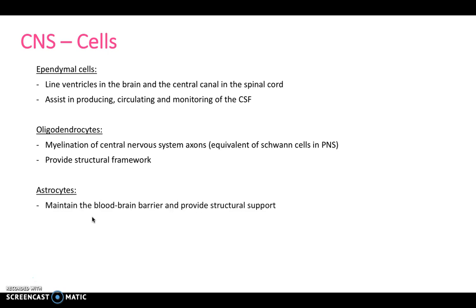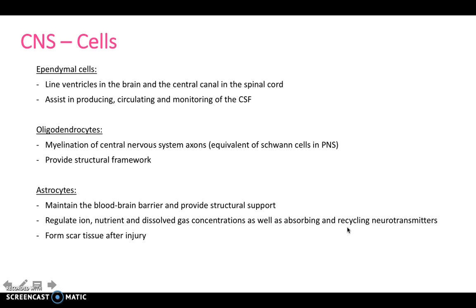Astrocytes are cells which maintain the blood-brain barrier and provide structural support. They regulate ion, nutrient, and dissolved gas concentrations, as well as absorbing and recycling neurotransmitters. They form scar tissue after injury as well. Lastly, we have microglia, and these remove cell debris, waste, and pathogens by phagocytosis.